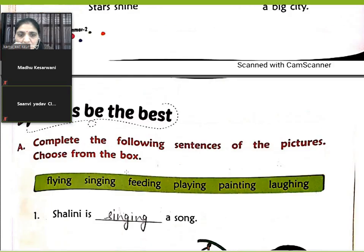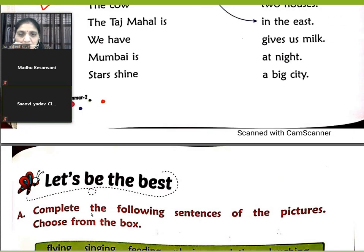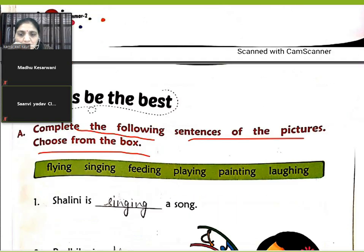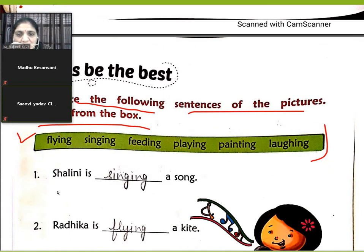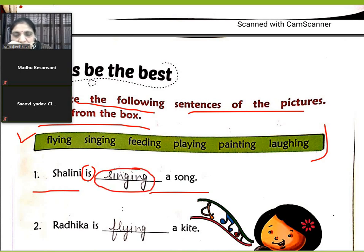Next, complete the following sentences of the picture — choose from the box. Some words were given in the box to fill and complete the sentences. 'Shalini is dash a song.' Here the helping verb and the verb both are used in the sentence.